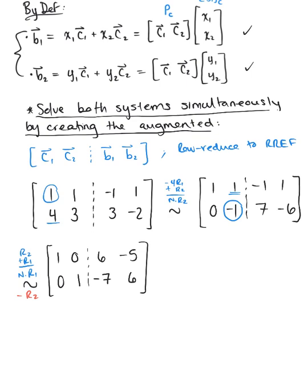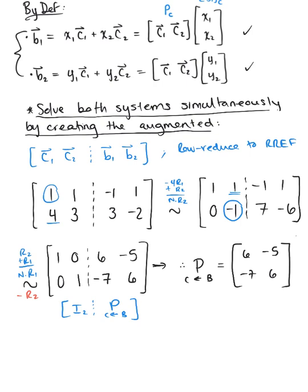We now have the 2×2 identity matrix on the left-hand side. This is the identity matrix augmented with the change of coordinates matrix from basis B to basis C. Therefore, the change of coordinates matrix from basis B to basis C is the matrix [[6, -5], [-7, 6]]. This is our final answer to part A.